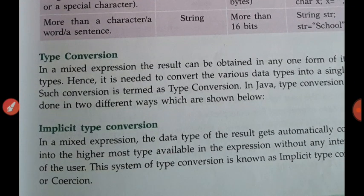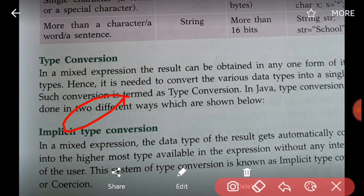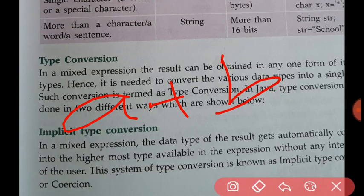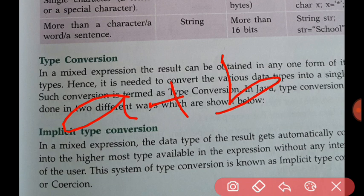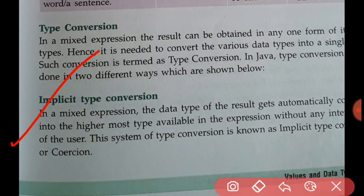Next is type conversion. In a mixed expression, suppose there is a plus b — a is of integer type and b is of double type. The compiler will get confused about what the result data type should be. For this case we need a type conversion, because the result should be in only one data type. There are two categories: implicit type conversion and explicit type conversion.